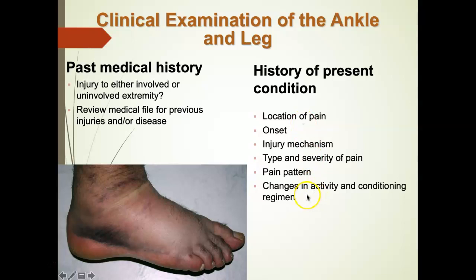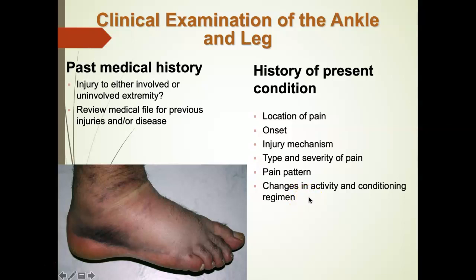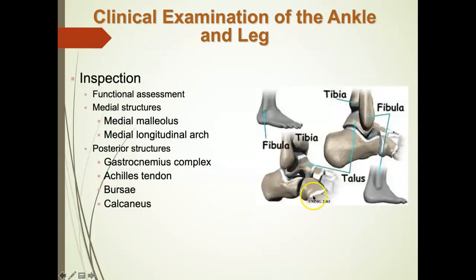These historical questions are important when you're suspecting an overuse injury: Have they changed their shoes? Have they changed their activity? Did they train on cement and now train on sand — or vice versa? Did they increase their mileage? What caused this injury? These questions are particularly important for chronic repetitive injuries.